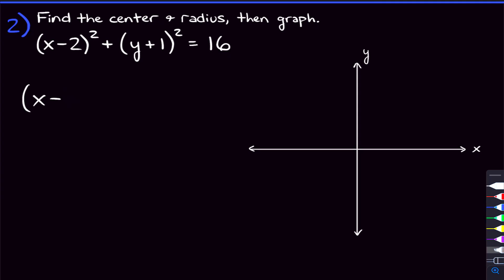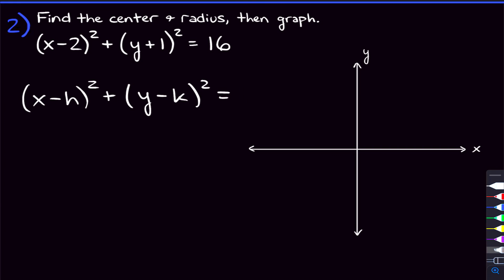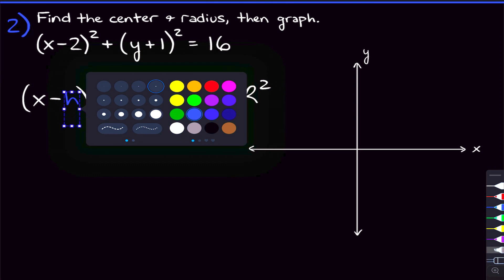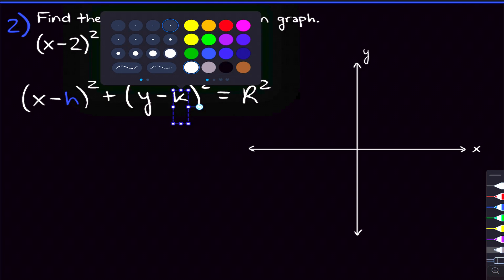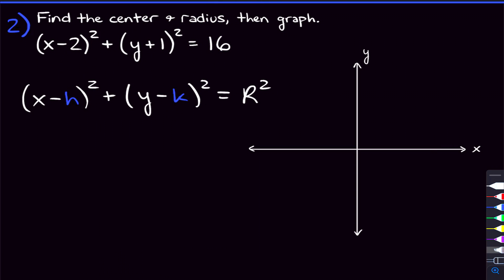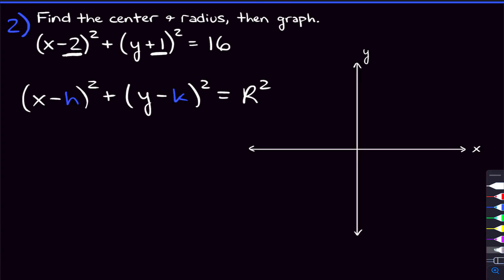The equation for a circle in general — not just one centered at the origin — is: (x minus h) squared plus (y minus k) squared equals r squared. The center is at (h, k). But those numbers are not negative 2 and positive 1 as you might think. They're actually positive 2 and negative 1 — you flip the signs. A lot of people get caught up there.